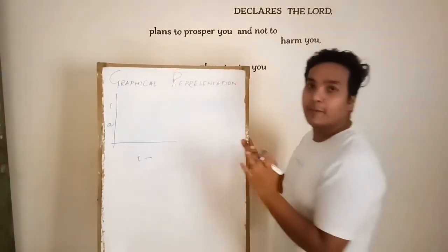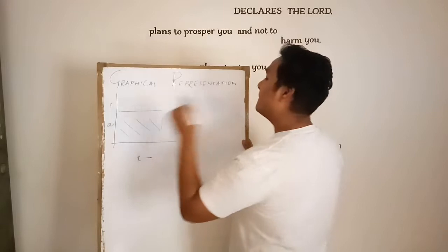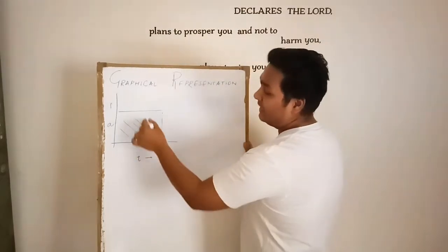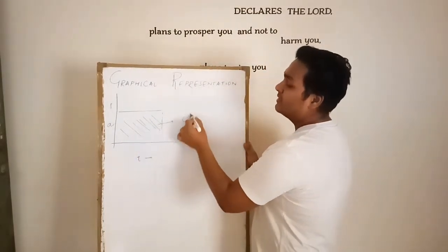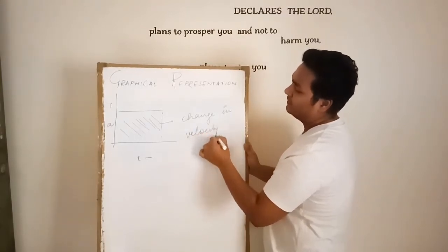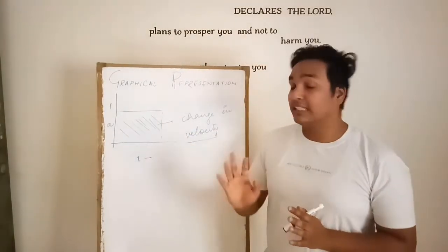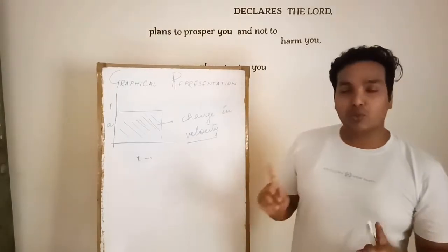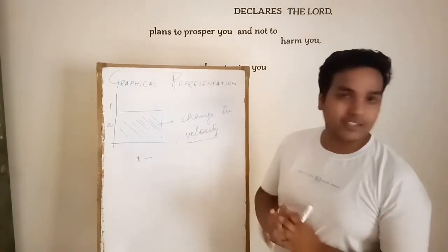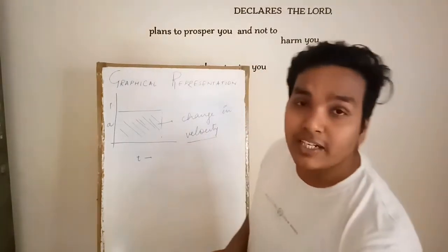In the acceleration-time graph, the area under the slope represents the change in velocity. The slope of the acceleration-time graph defines nothing. There is only one thing in the acceleration-time graph — the area under the slope — which determines the change in velocity. There are four cases for the acceleration-time graph and we will study them one by one.